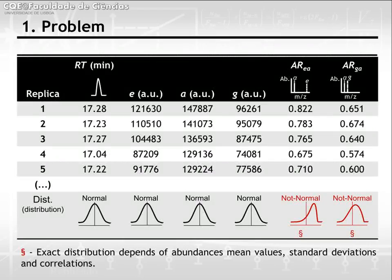If you check signals from replicate injections of analyte solutions, you can see that analyte retention time and abundance of analyte fragments are normally distributed. However, if you check the ratio of fragment abundances, you can see that this ratio is not normally distributed.